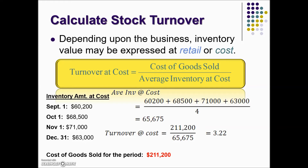The turnover ratios can be identical using either method. The variation that often exists is caused by stolen merchandise — called inventory shrinkage — or merchandise that has been marked down or has become unsellable. Normally, turnover at retail is slightly lower than turnover at cost. For this reason, many businesses prefer this more conservative figure.